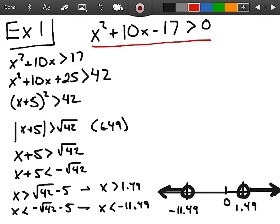This is your function you start off with. The first thing I'm going to do is move this 17 over and add 17 to both sides of the equation. So this goes to 0 and then I get x squared plus 10x is greater than 17.